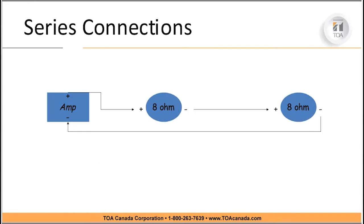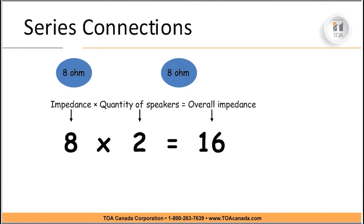You can also do a series connection, going positive, negative, positive, negative. In this example with two speakers, you multiply by the number of speakers on your speaker line, giving a total load of 16 ohms. To maintain a specific load, a low impedance system can be fairly complicated on the cable side.